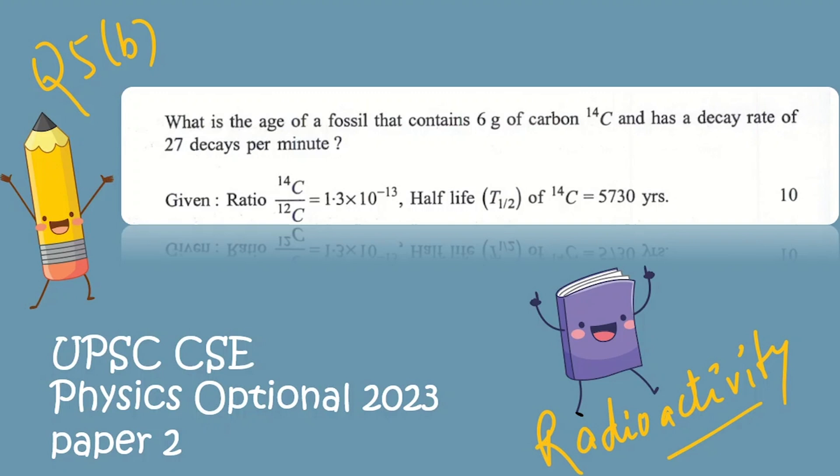Hello everyone, in today's video we will be seeing this question from the year 2023 physics optional paper 2. The question asks us to find the age of a fossil that contains 6 grams of carbon-14 and has a decay rate of 27 decays per minute. We are given the ratio of 14C to 12C and the half-life of 14C.